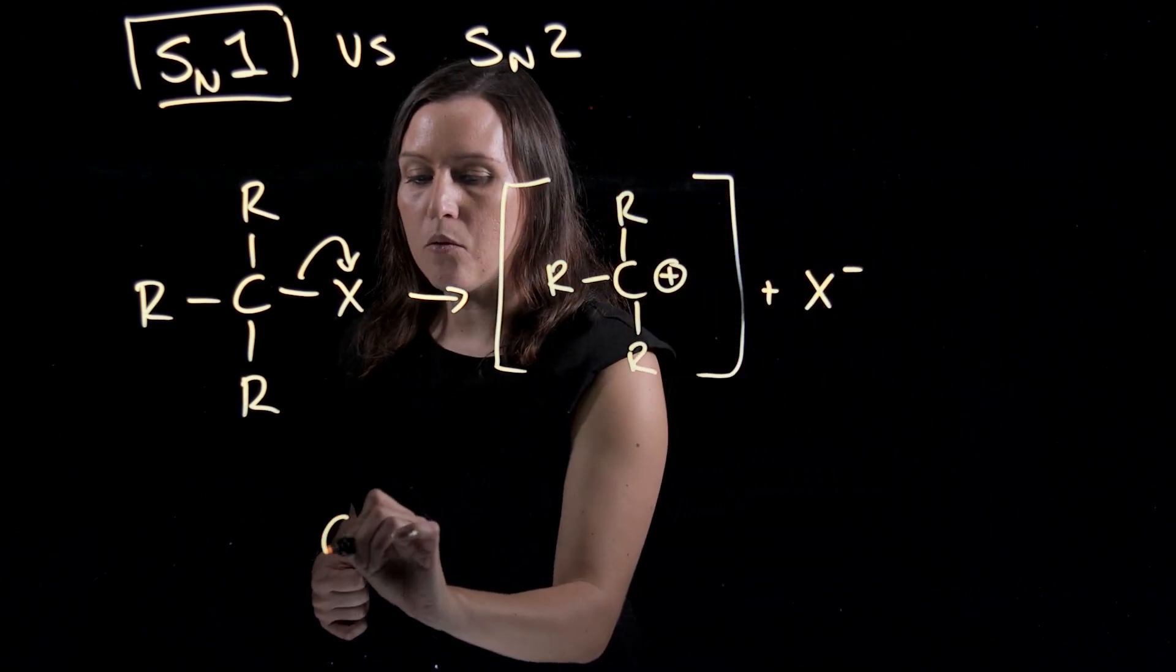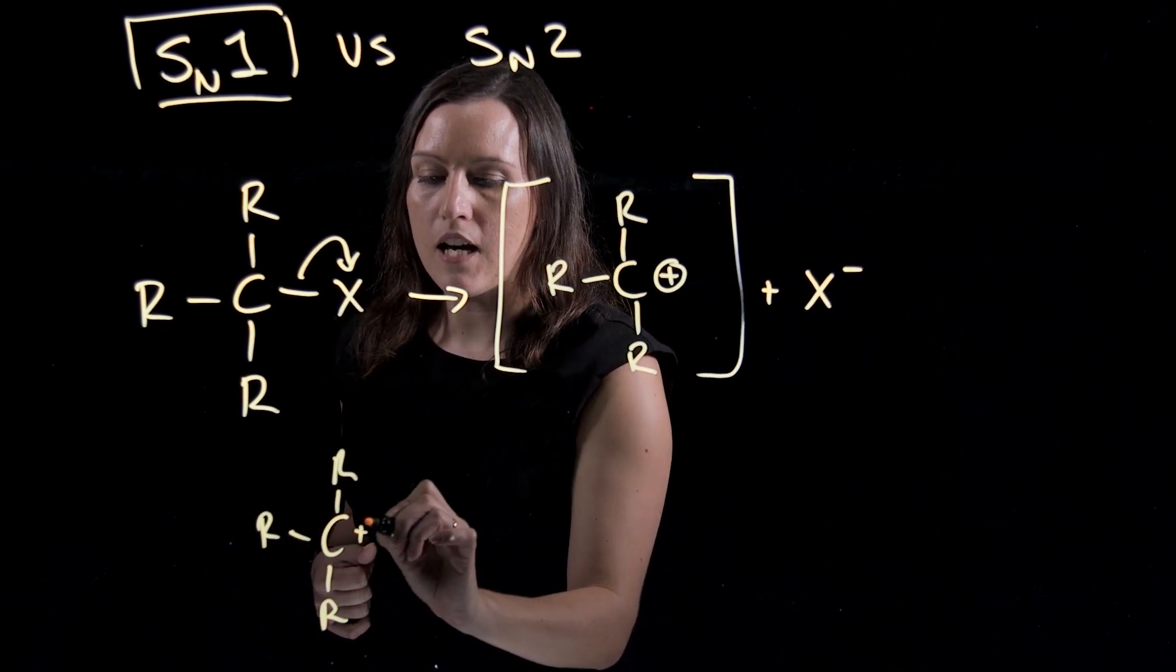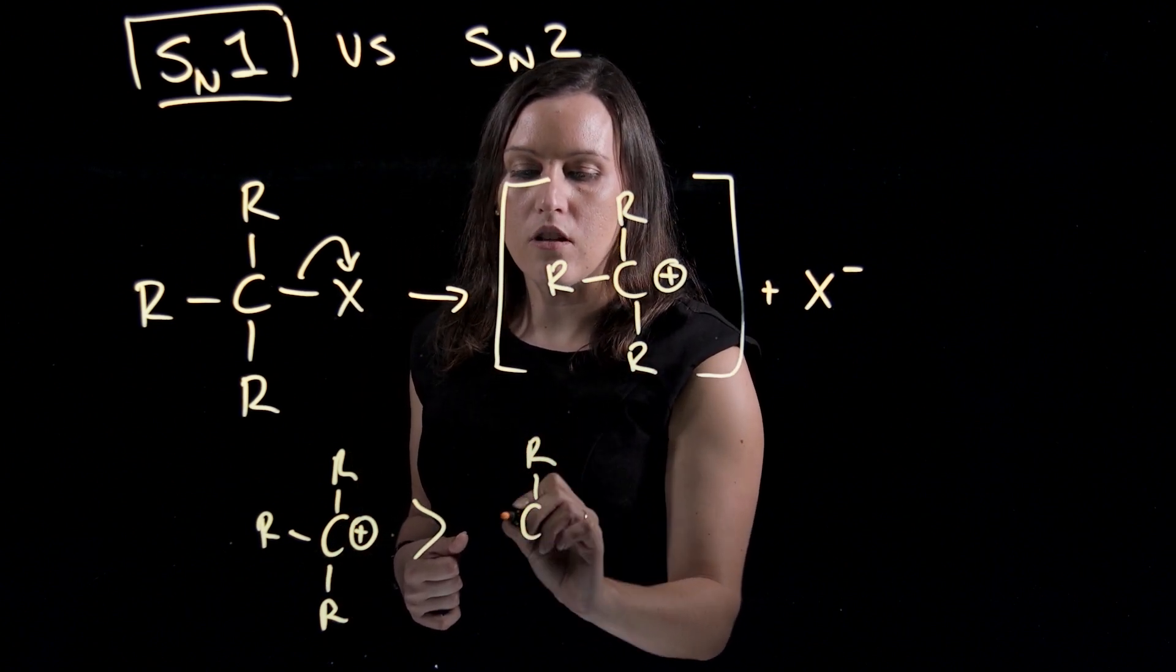So if you forget what they are, we've got our tertiary carbocations where we have three R groups attached and that's more stable than if we had a secondary carbocation.